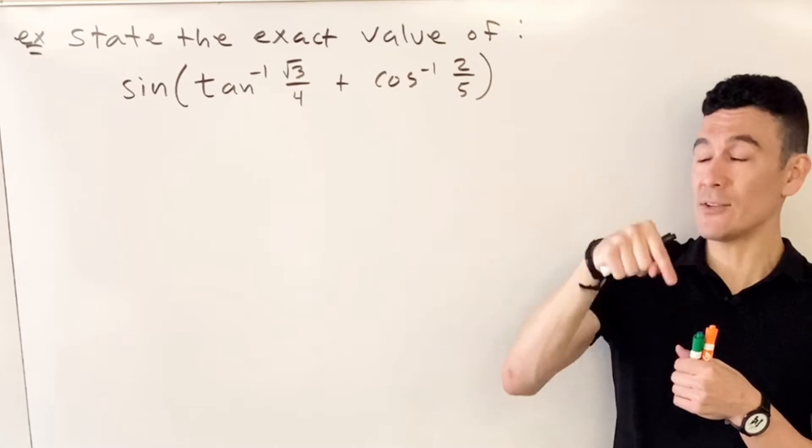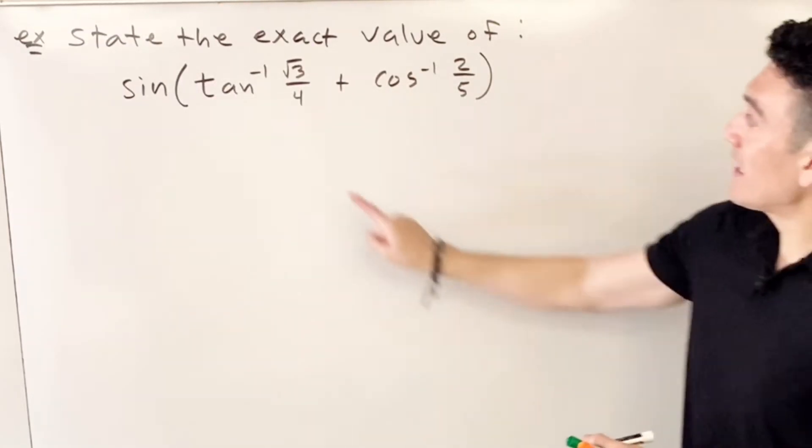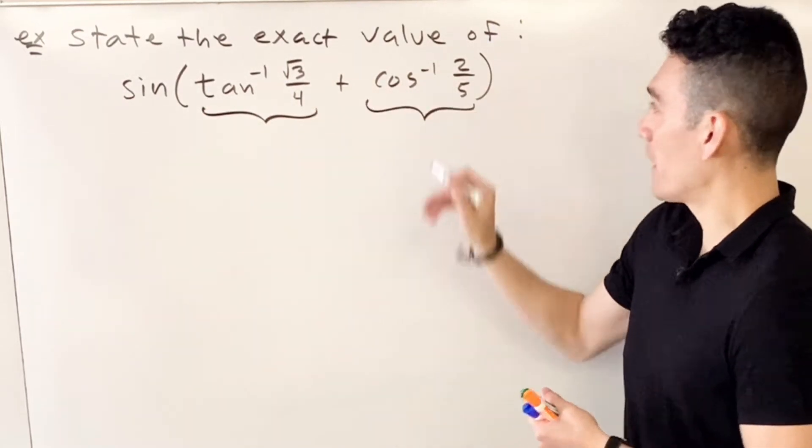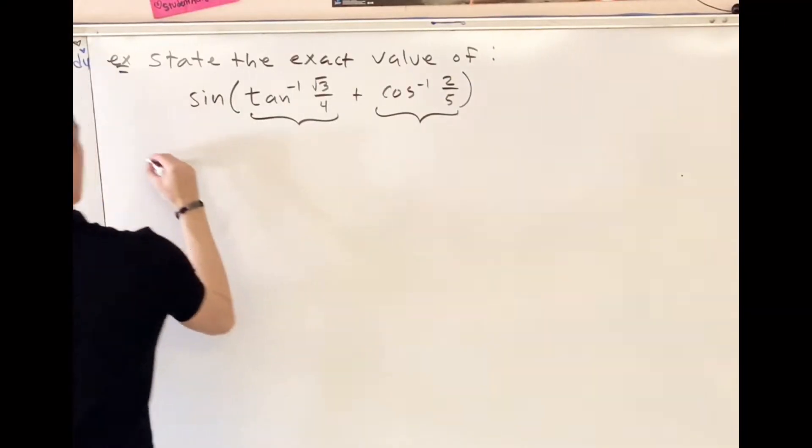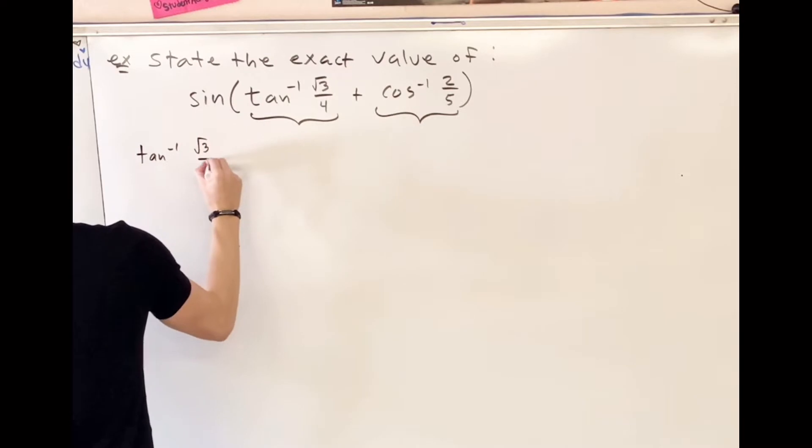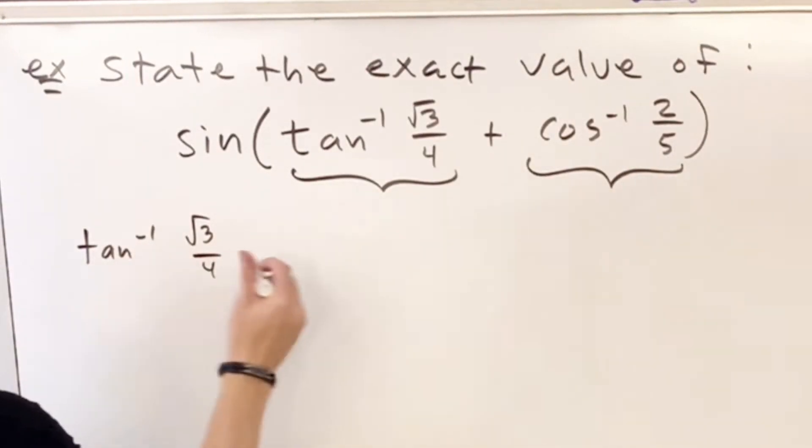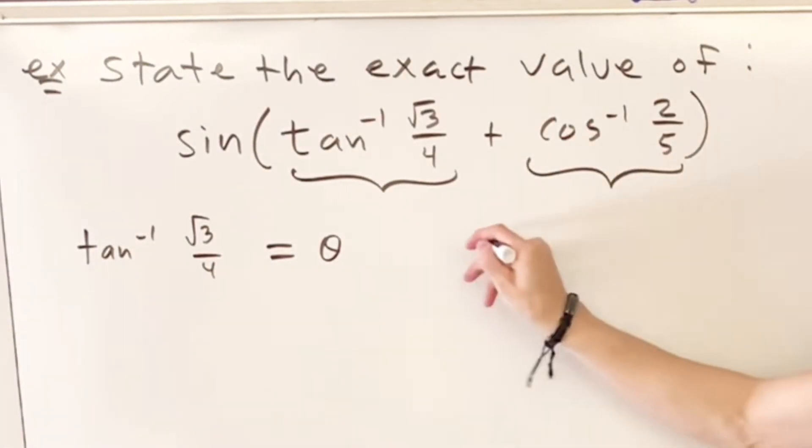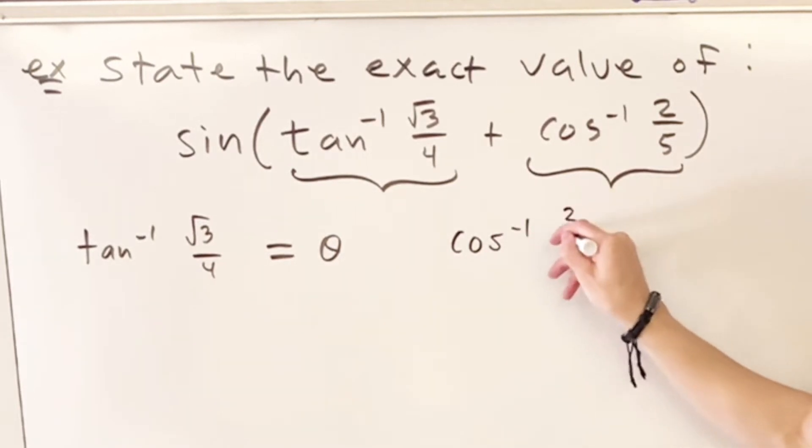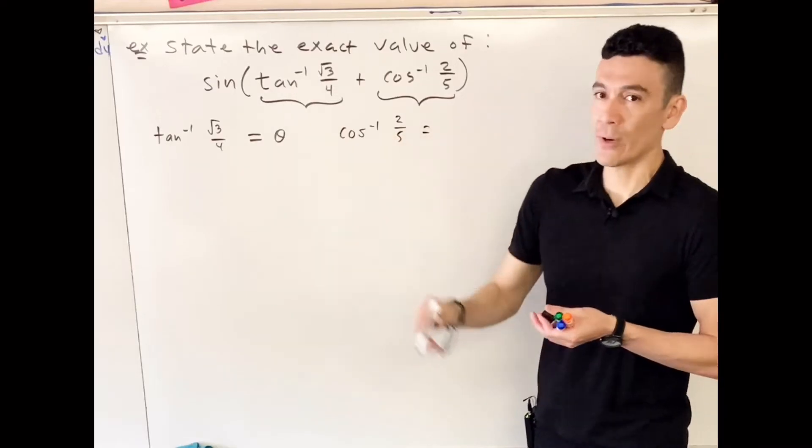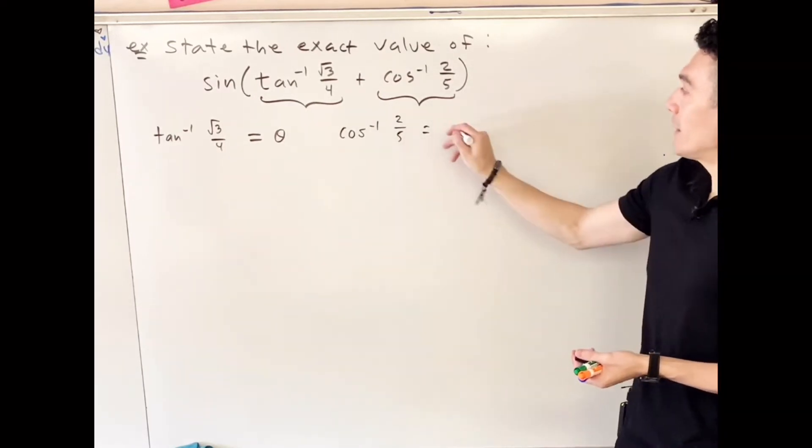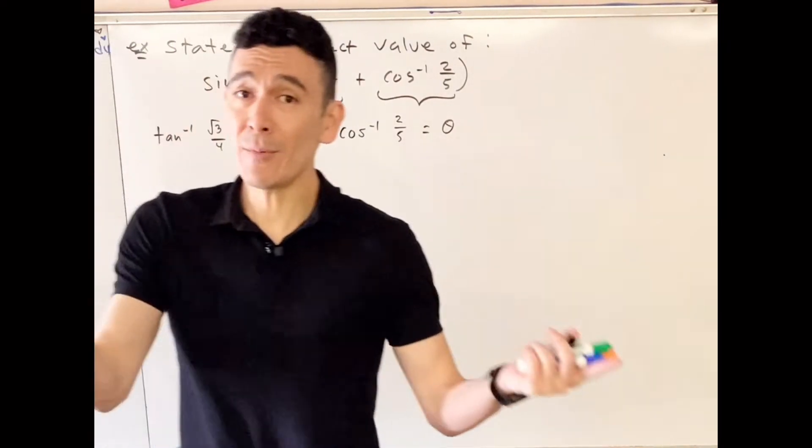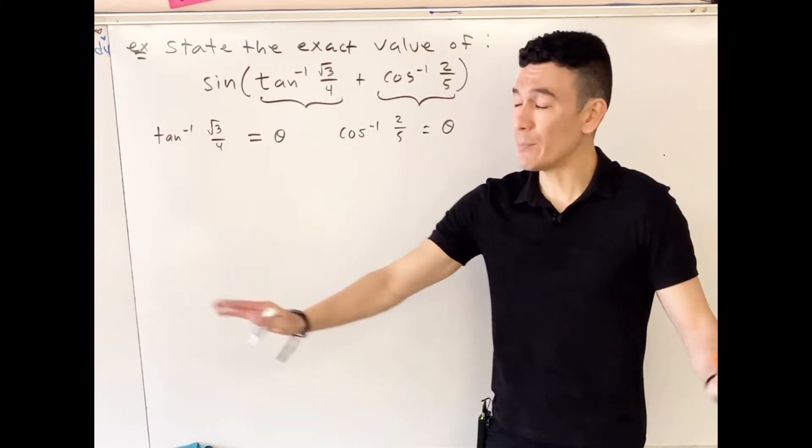Let's finish this problem to finish this particular set of notes. Looking inside the parentheses, I have two different setups going on simultaneously. I have tangent inverse of square root three-fourths; the inverse of a trig function equals some angle theta. For this part, cosine inverse of two-fifths—again, the inverse of a trig function is some angle theta. However, I don't know if these thetas are the same angle; they're probably two completely different people, so call this theta one and theta two.